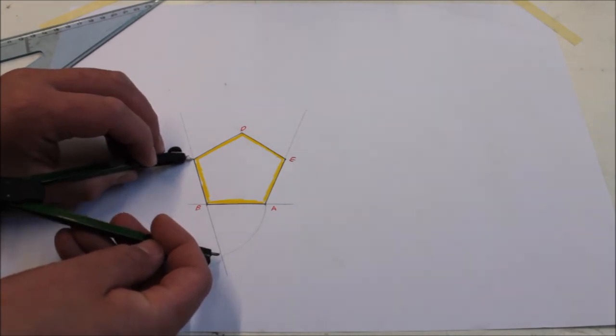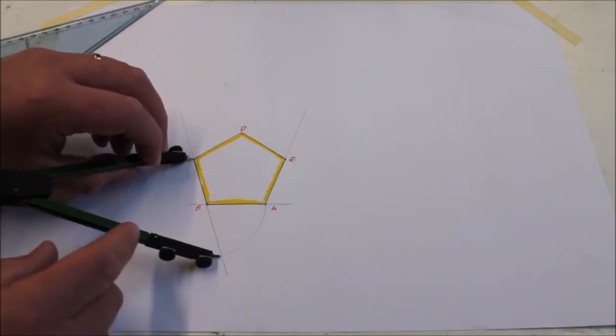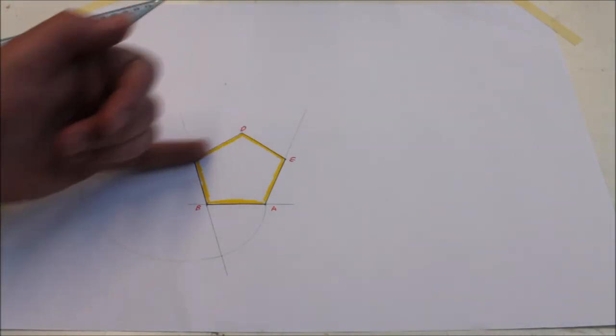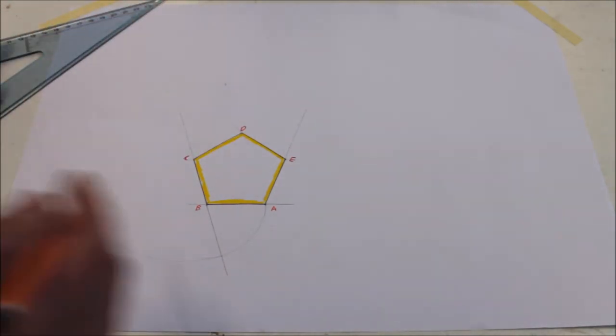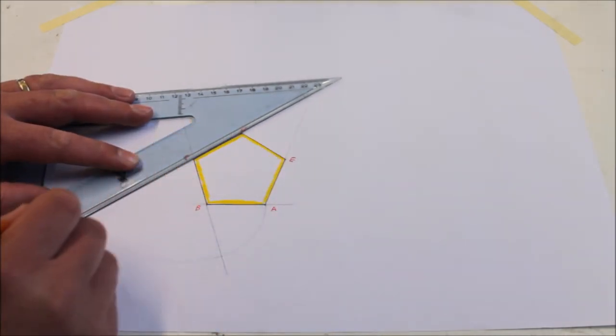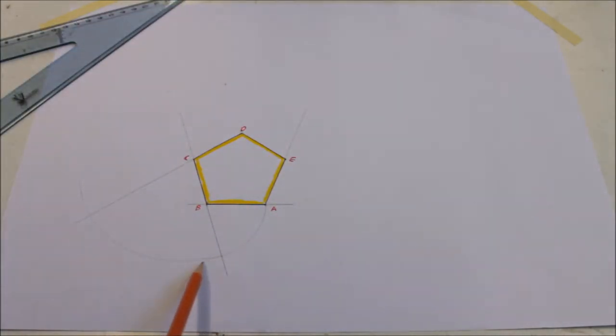So pin the compass at C, lead at our point there and rotate that around until you reach the DC line. So extend out the DC line and now it's rotated up to there.